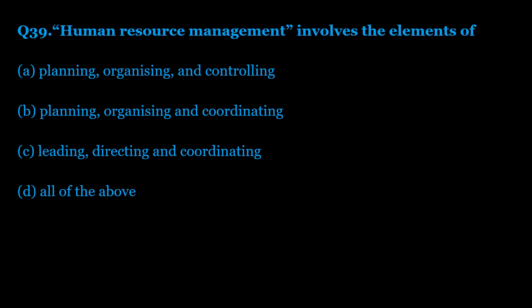Question number 39: Human resource management involves the elements of — Option A: planning, organizing, and controlling. Option B: planning, organizing, and coordinating. Option C: leading, directing, and coordinating. Option D: all of the above. The correct answer is Option D — all of the above.